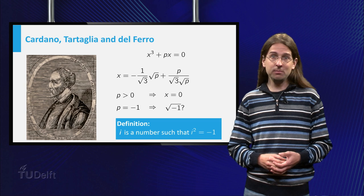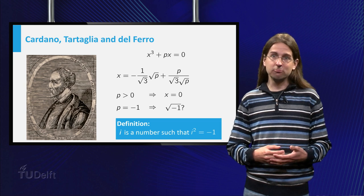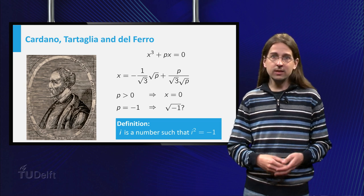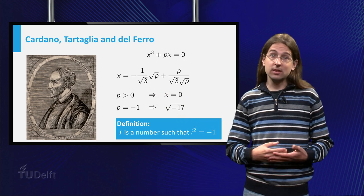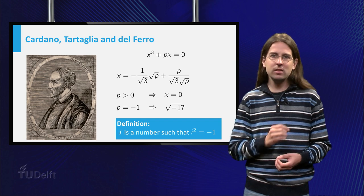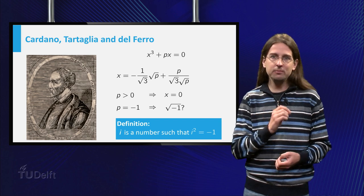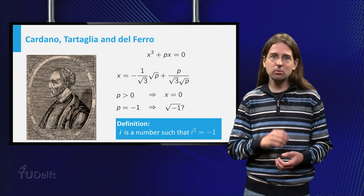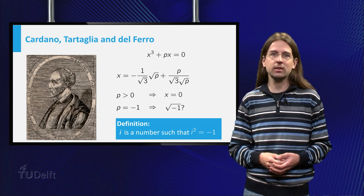When you first encounter them, these complex numbers seem really strange. Indeed Cardano, who first published this formula and discovered complex numbers, spent many pages considering many different cases, just to avoid using square roots of negative numbers.